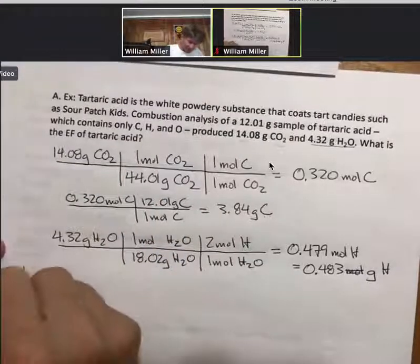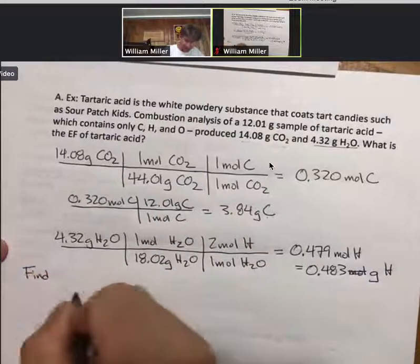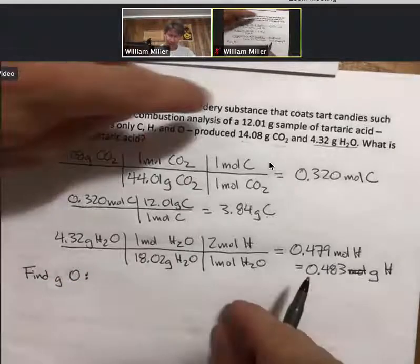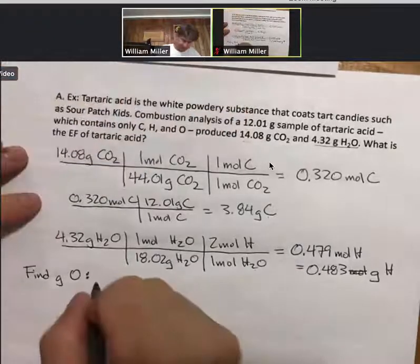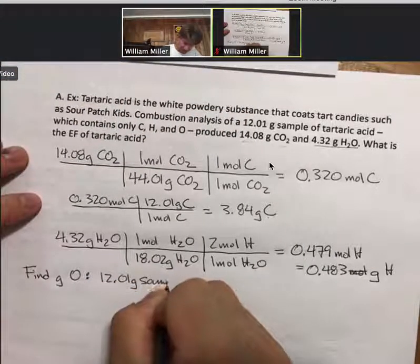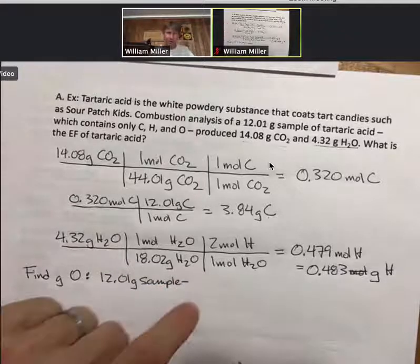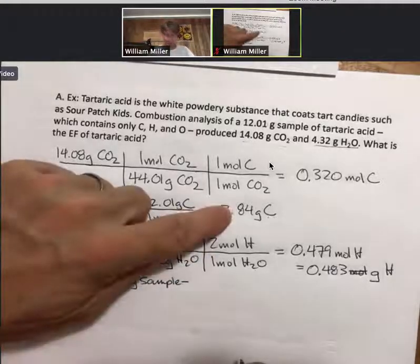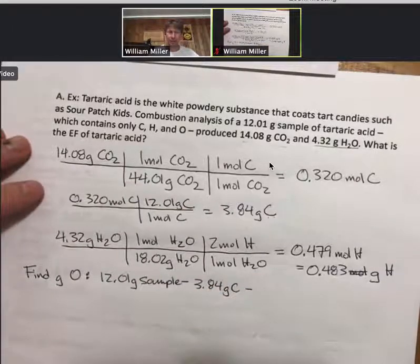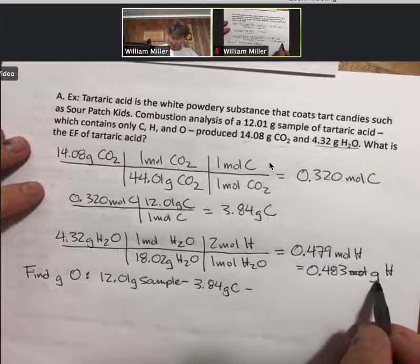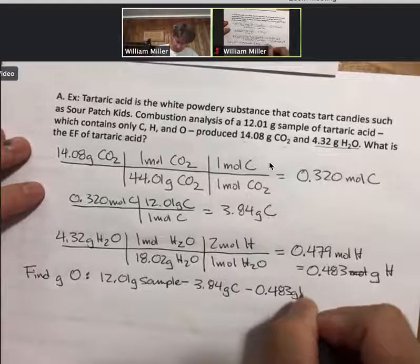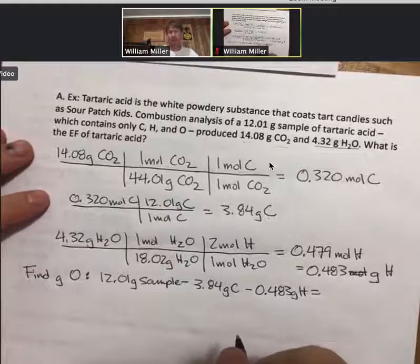I'm going to call this find grams of oxygen. And the technique is to take our mass of our sample. Subtract off our grams of carbon. Subtract off our grams of hydrogen. And we'll be left with grams of oxygen.